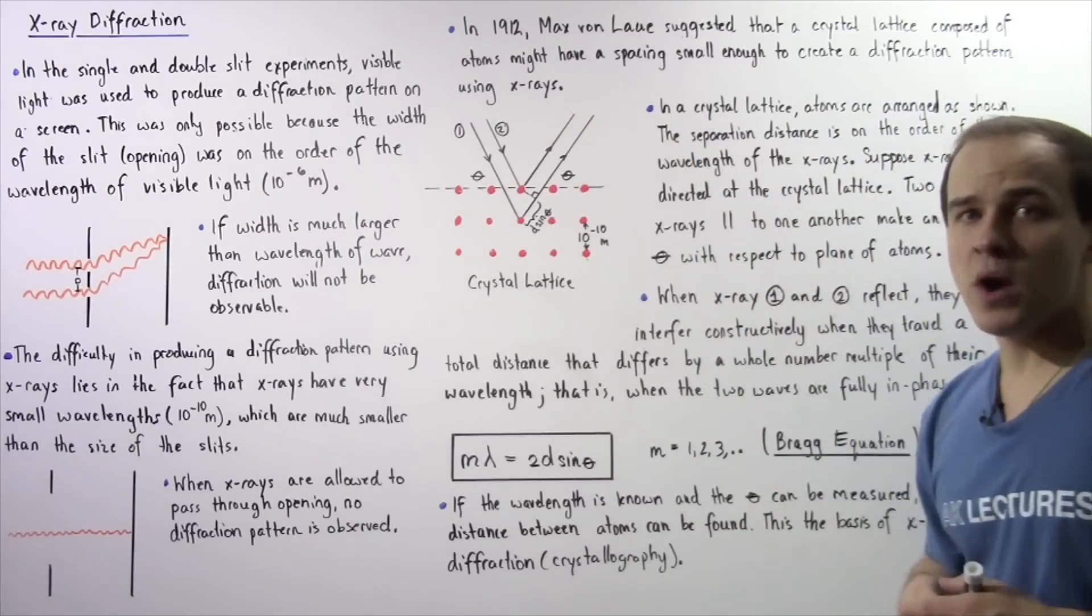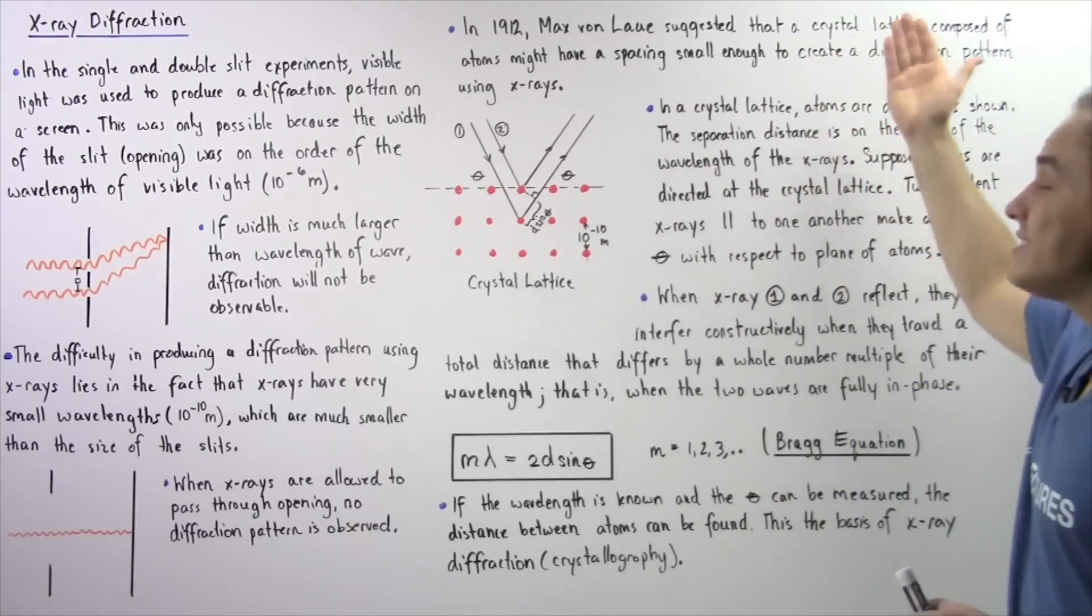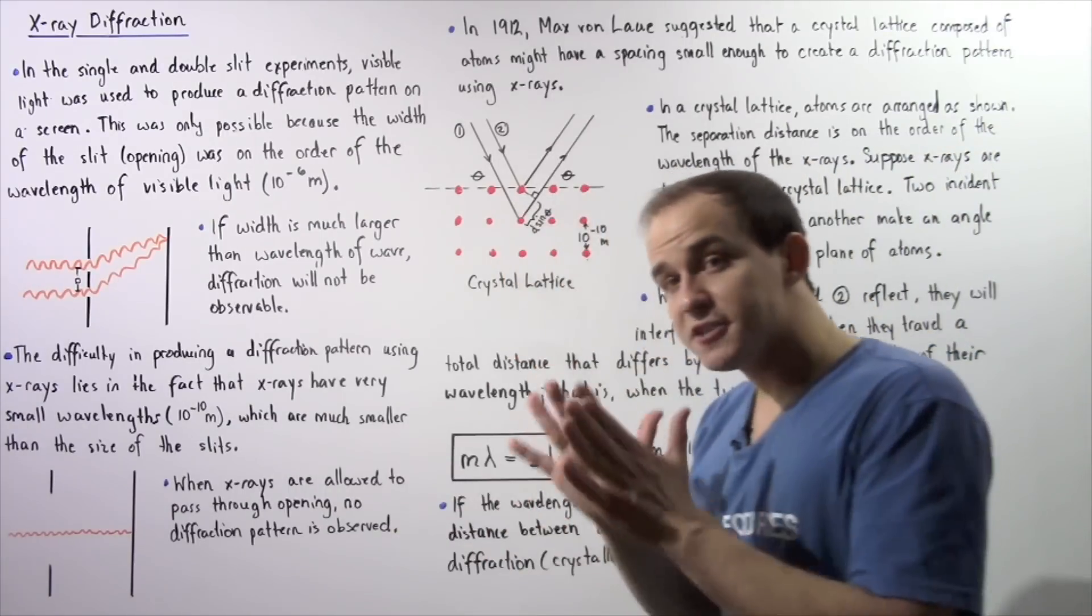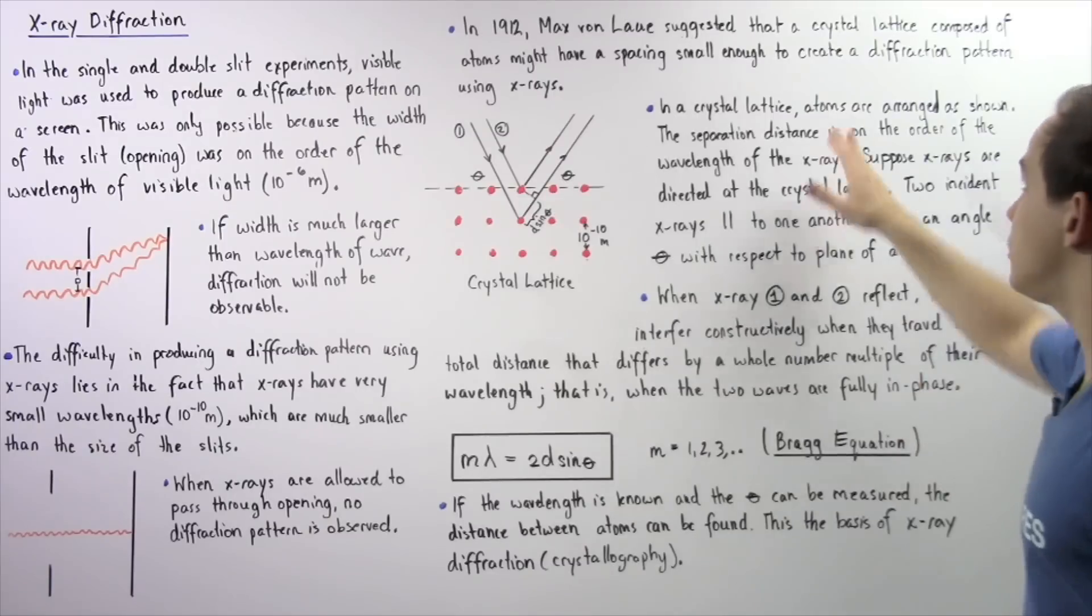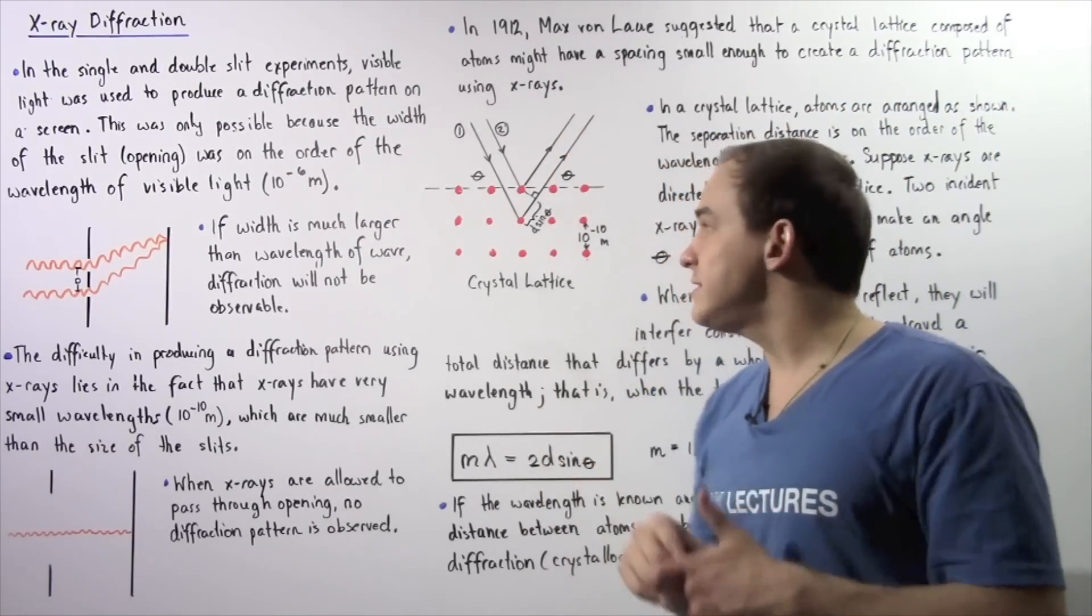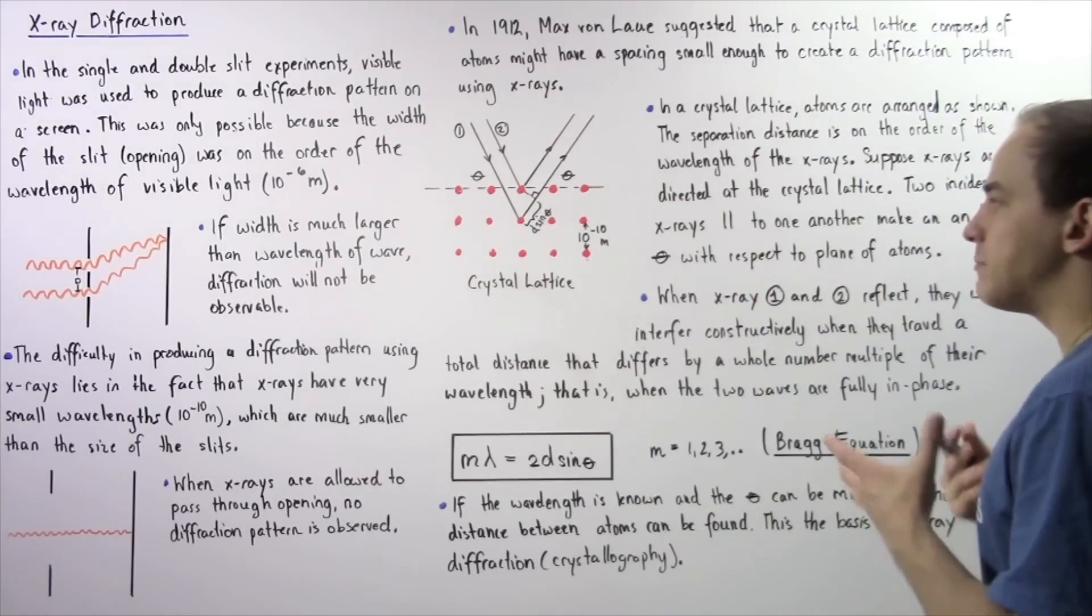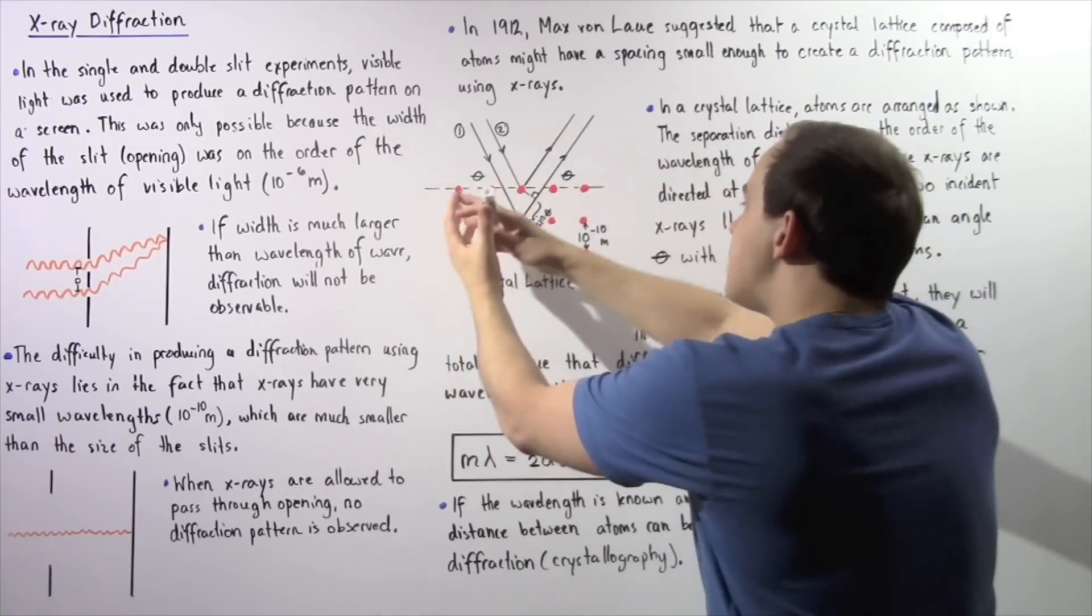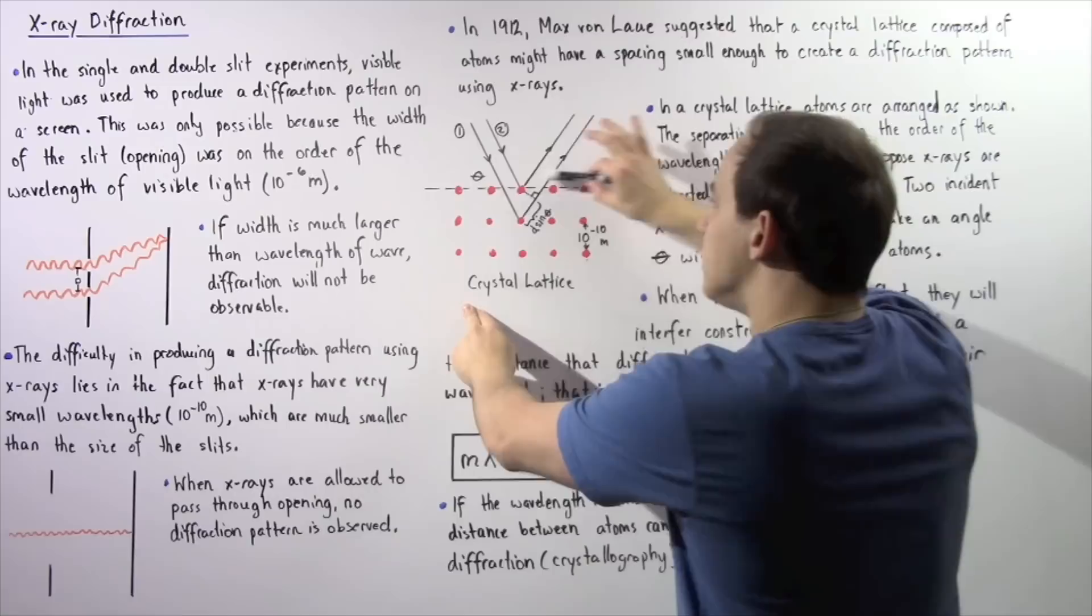In 1912, Max von Laue suggested that a crystal lattice composed of atoms might just have a spacing between the atoms that are small enough to actually create a diffraction pattern using X-rays. To see exactly what we mean, let's look at the following diagram. These red atoms form the following crystal lattice.